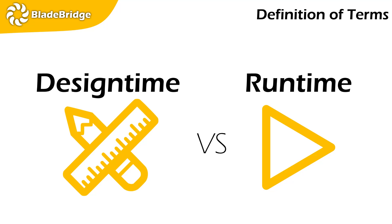Runtime environments would be things like databases, ETL tools, even large applications like SAP and Oracle — all represent runtimes. Versus a design time: a design time is Word, Excel, even some design suites like Adobe and other types of design environments. In design suites, there's usually not that rigorous of uptime requirements and other things like that, because essentially you're working at a design-level event.